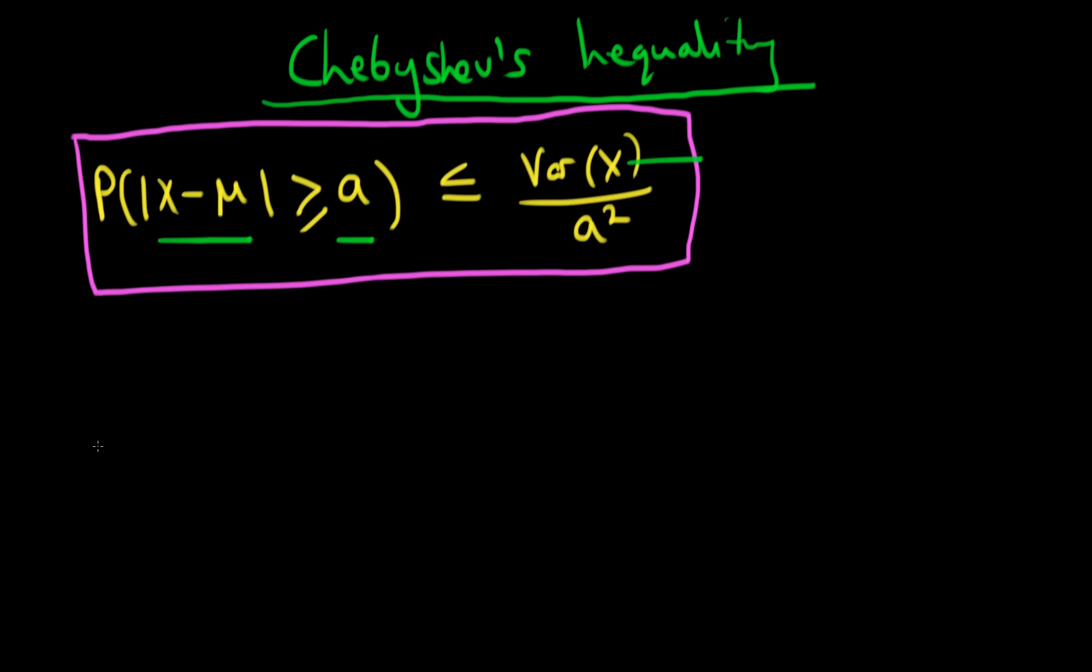So how do we go ahead and prove this? Well, first of all we write down Markov's inequality, which is, if you remember from last time, the probability that some random variable x is greater than or equal to some constant a is going to be less than or equal to the expected value of x divided by a.